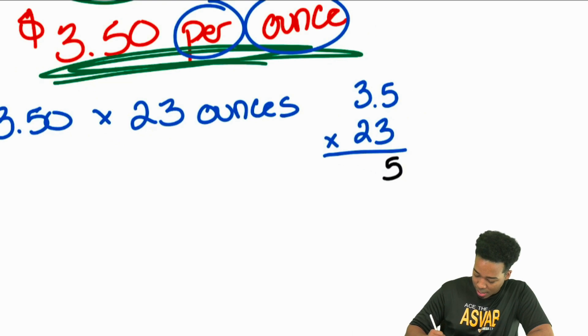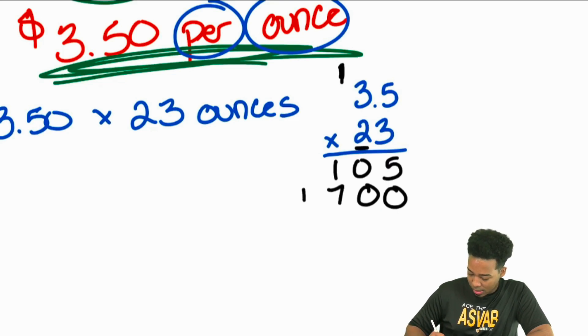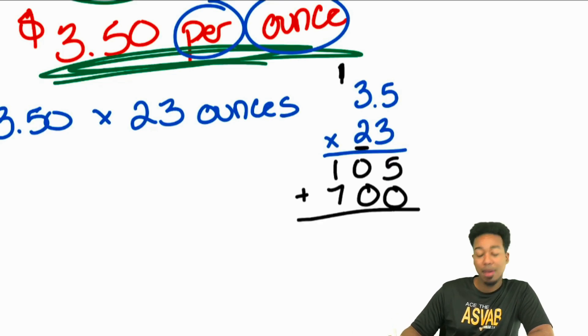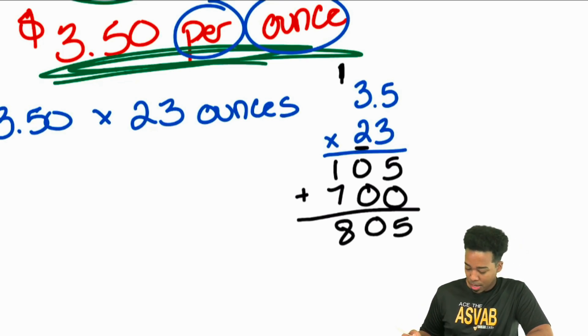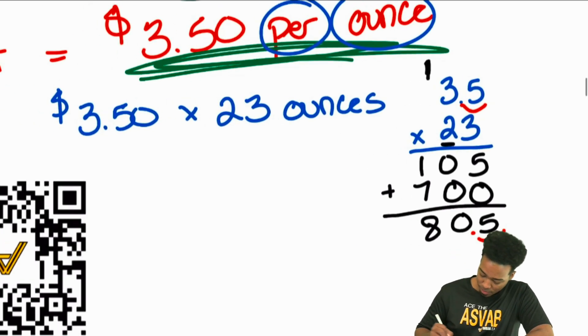5 times 3, that's 15. Carry the 1. 3 times 3 is 9, carry the 1 is 10. Next up, we'll carry a 0 for that next digit. Then we have 5 times 2, which is 10. 3 times 2, which is 6, carry the 1 is 7. We add that back together and we have 5, 0, and 8. Notice we have only one decimal place to deal with. So we'll bring one decimal back. So that's going to be $80.50 right there.